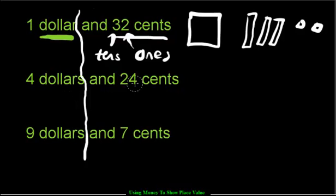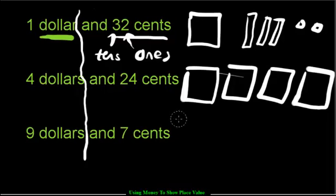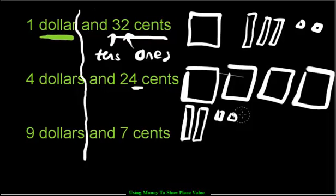$4.24. We have $4 right here — that's four hundreds. We have $4 and $0.24 is going to be like this. We have 10, 20, and then four ones — one, two, three, four.